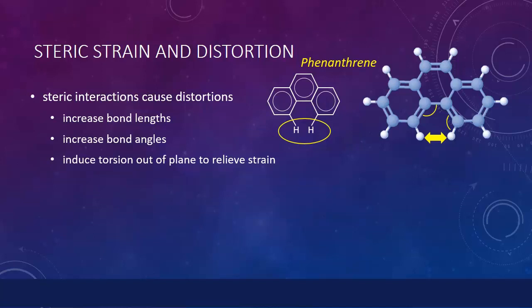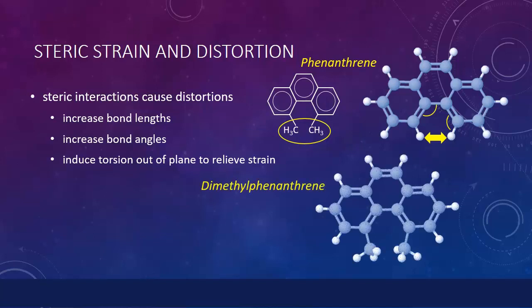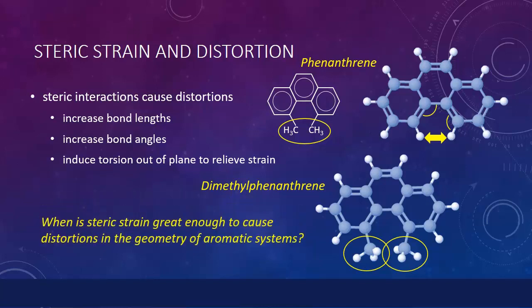Steric strain can be increased further through the substitution of hydrogen atoms for larger groups. For example, in dimethylphenanthrene, the steric strain is intensified by placing two methyl groups very close to one another. The question we will be interested in exploring through this exercise is, when is the steric strain great enough to cause distortions in the geometry of aromatic systems, and how far can they be distorted?